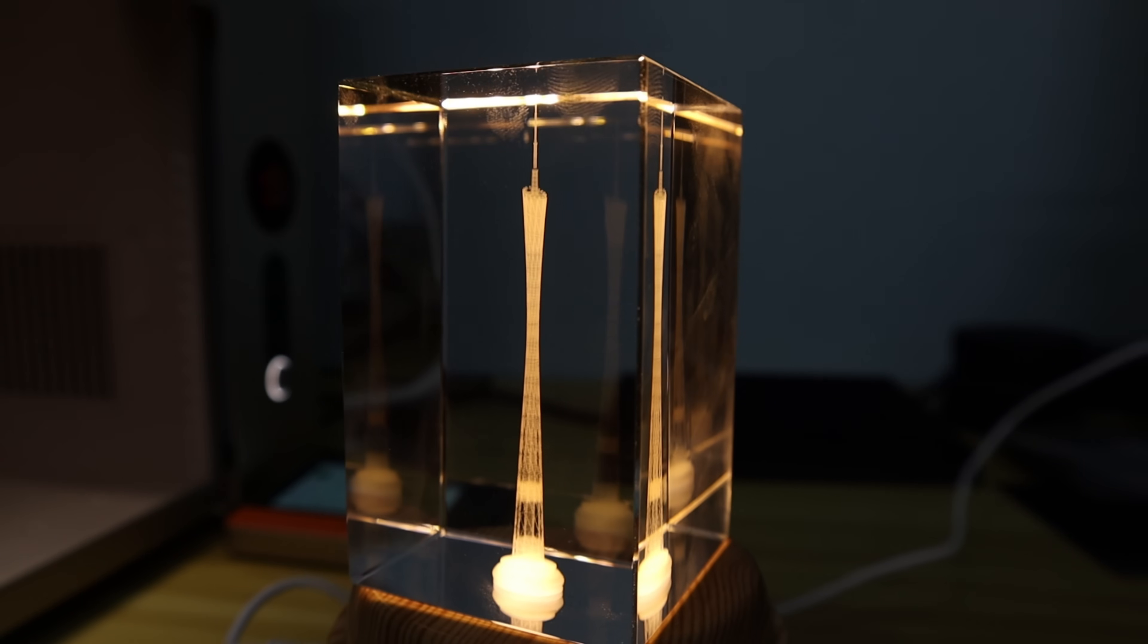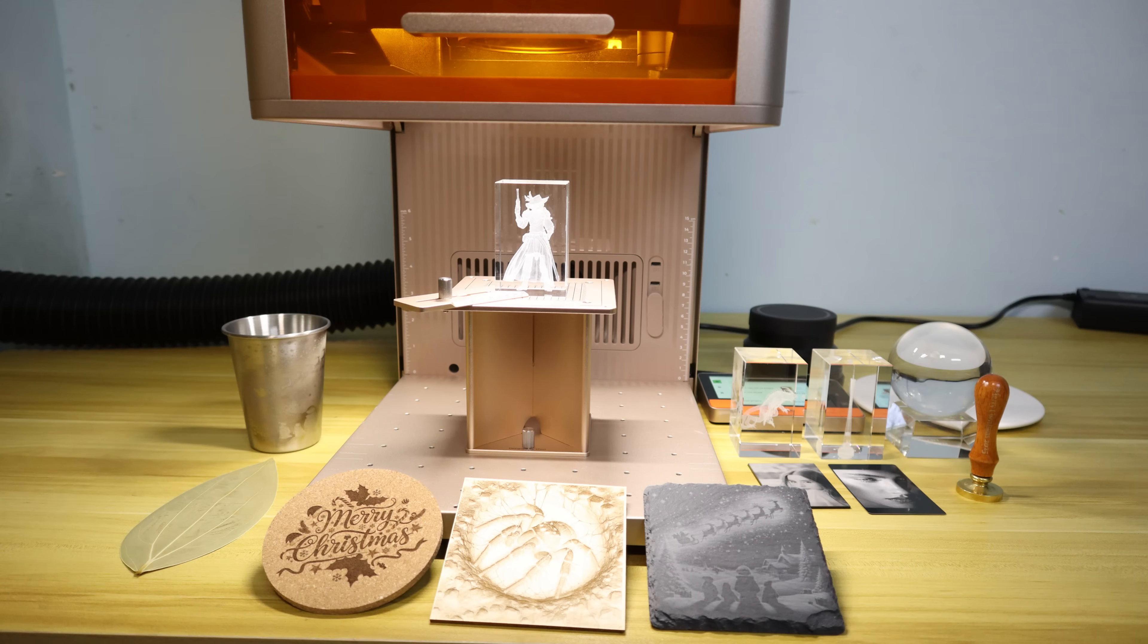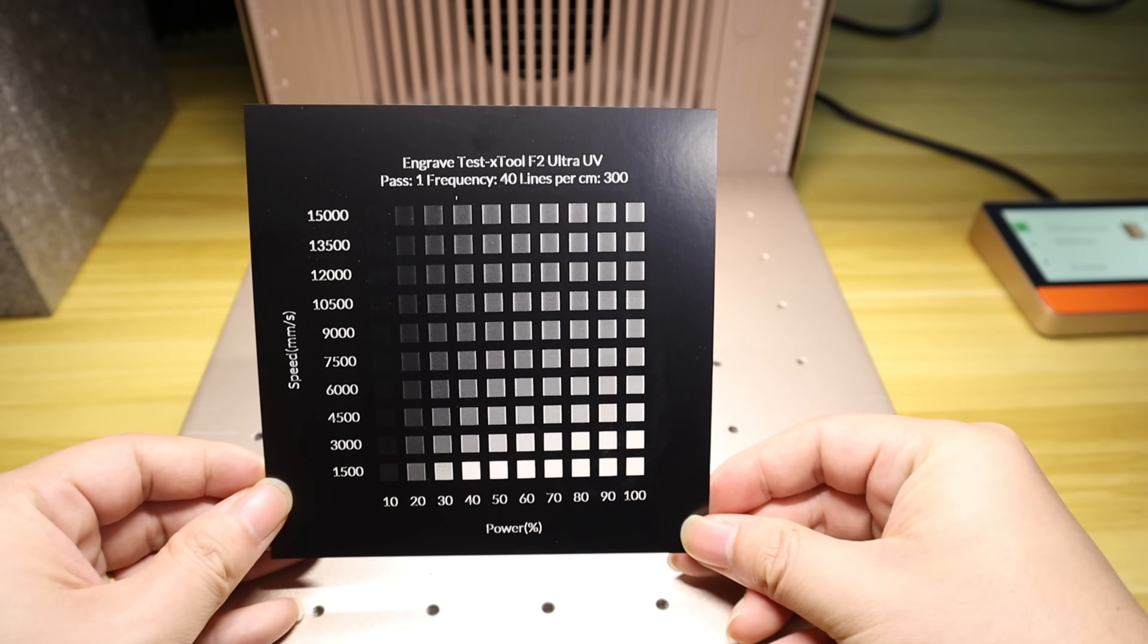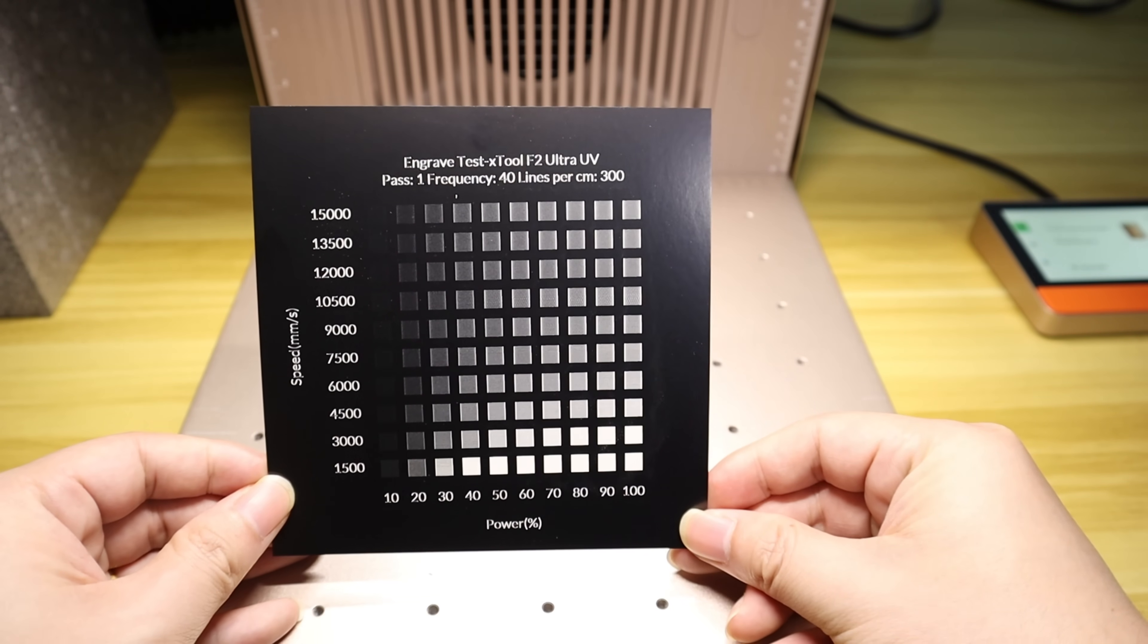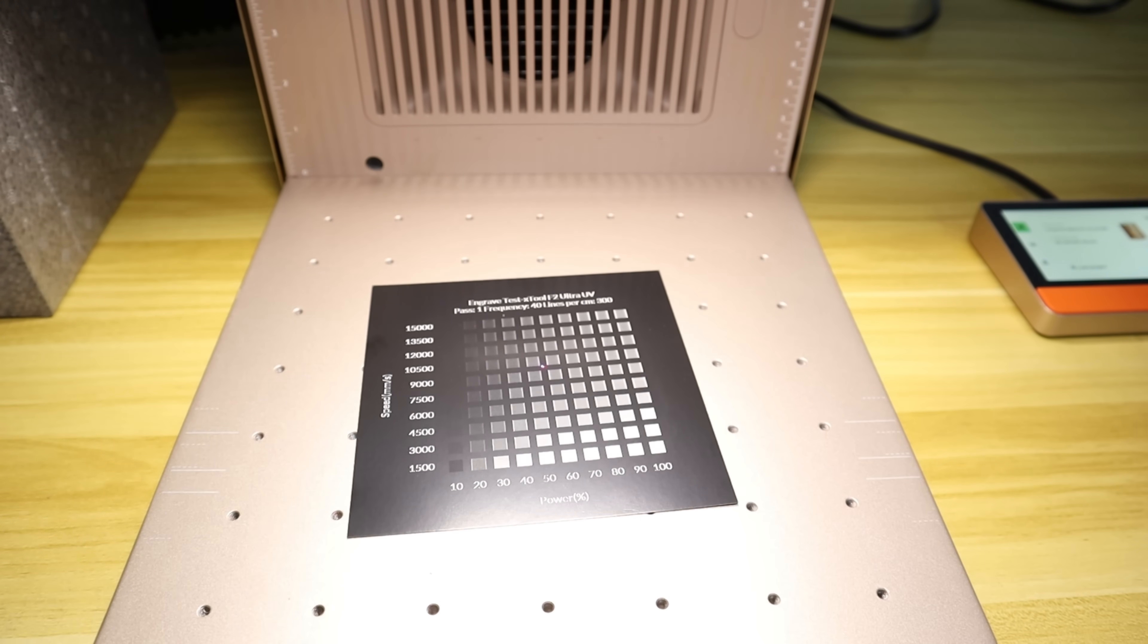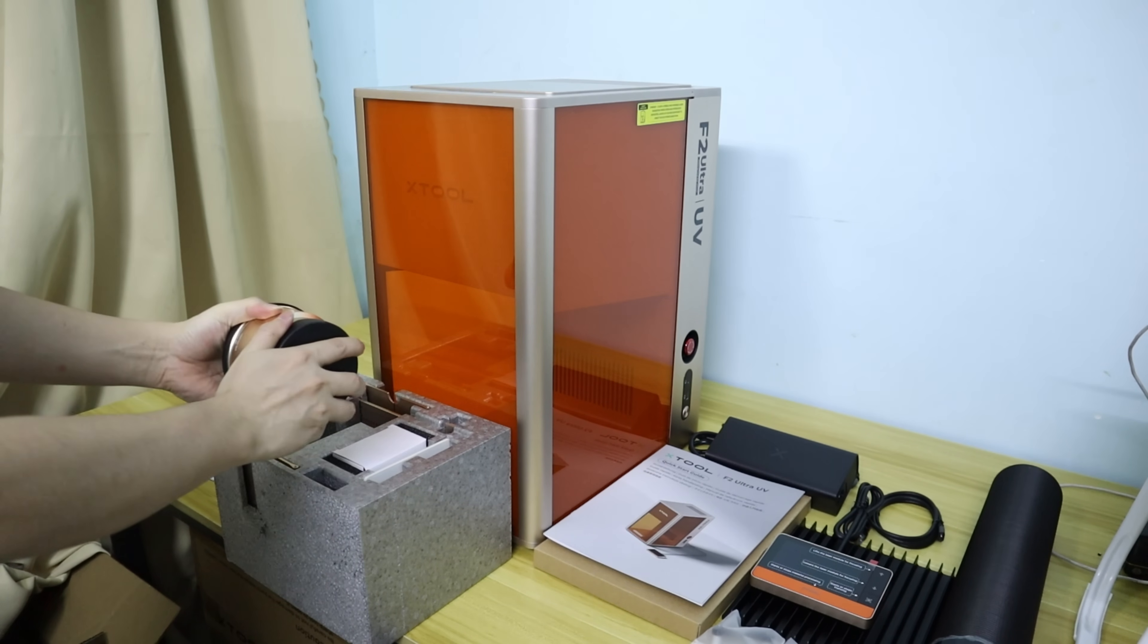The ACE2 Ultra UV laser can engrave a wide range of materials. Despite its 5W 355nm UV laser power, its cutting performance rivals that of a 15W diode laser. Furthermore, the ACE2-F2 Ultra UV laser engraver's maximum speed of 15,000 mm per second makes it exceptionally well-suited for high-efficiency production applications.